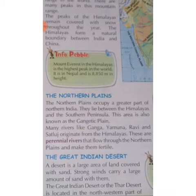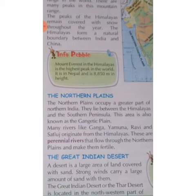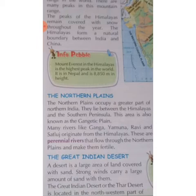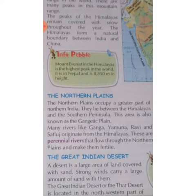Now, the Great Indian Desert. A desert is a large area of land covered with sand. Too much sand is spread everywhere. Strong winds carry a large amount of sand with them because everywhere is sand, and when strong winds are blowing, they carry the sand along with them.